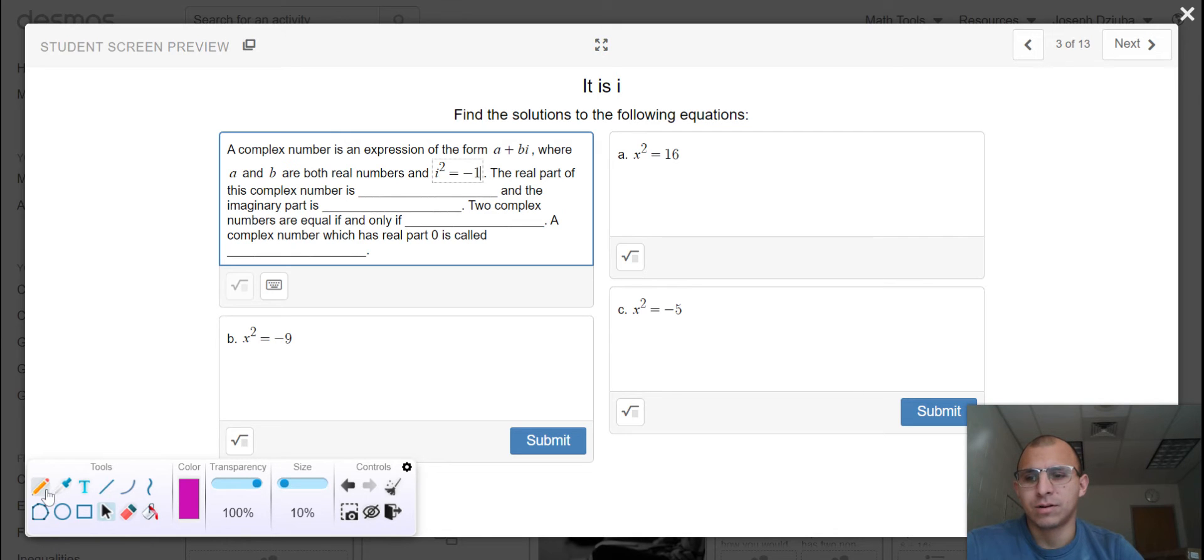So why do we start with i to the second power? Because we can reverse engineer then the value of i. Within this equation, if I wanted to determine what the value of i would be, I could take the square root of both sides and I can see that i really represents the square root of negative 1. So a long time ago rather than write the square root of negative numbers which don't yield real solutions, we've opted to use the letter i to dictate that we are dealing with the imaginary number system.